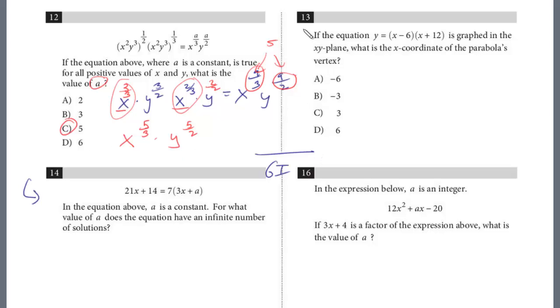Let's take a look at the last question before the problem solving. Let's take a look at 13. In the equation above, y equals x minus 6 times x plus 12, the quantity is graphed in the xy plane. What is the x-coordinate of the parabola's vertex? So you really should know the three forms of a parabola: standard form, vertex form, and this is called intercept form. And you really should know how to find the vertex in all three methods.